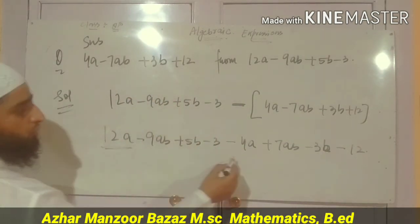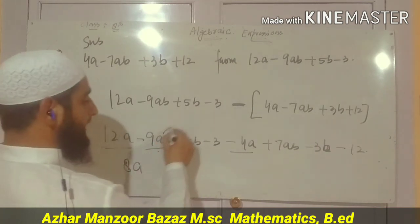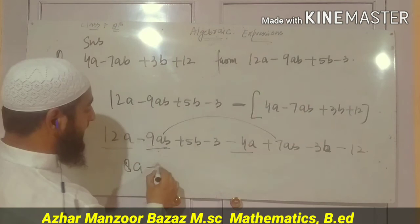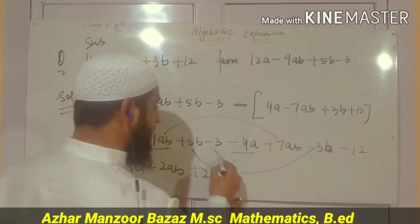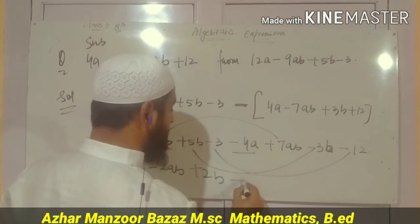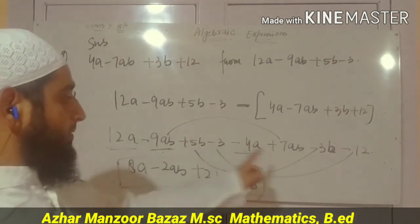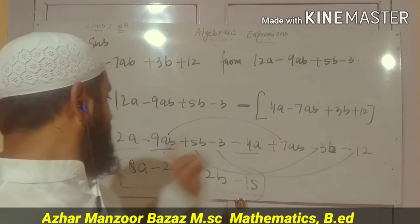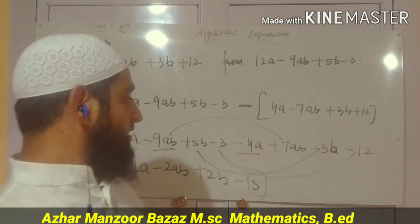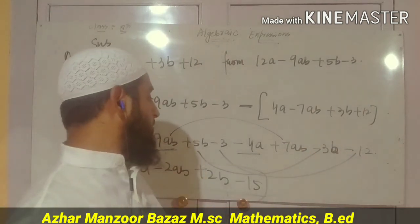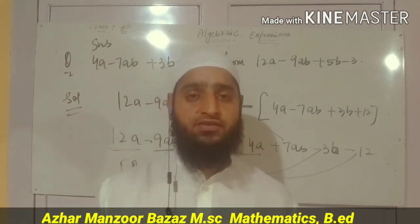Now calculate: 12a minus 4a is 8a; minus 9ab minus minus 7ab is minus 2ab; 5b minus 3b is plus 2b; minus 3 minus 12 is minus 15. So the answer is 8a minus 2ab plus 2b minus 15.